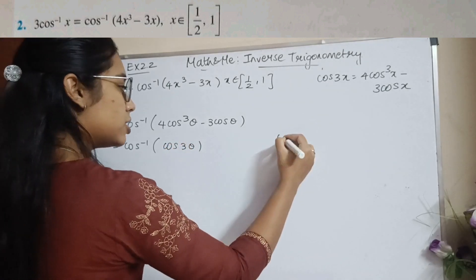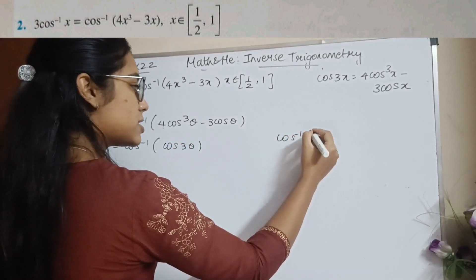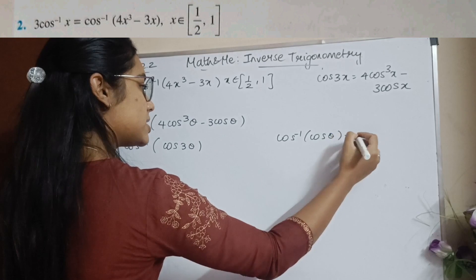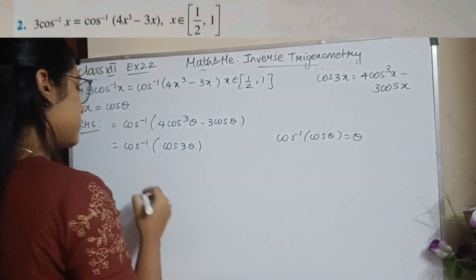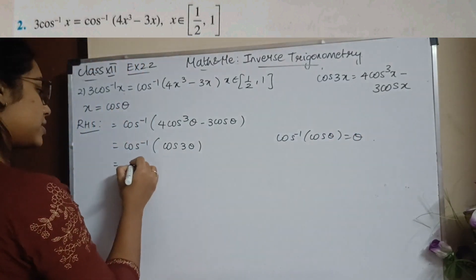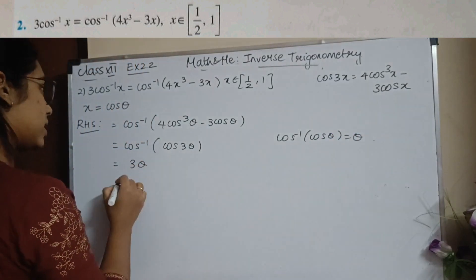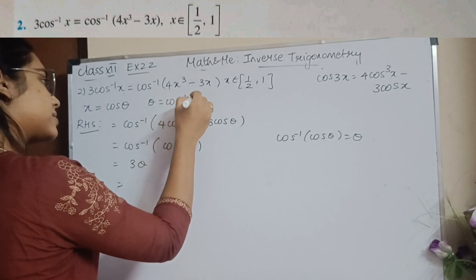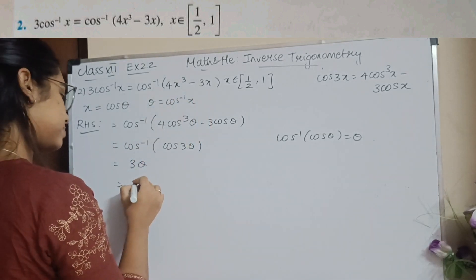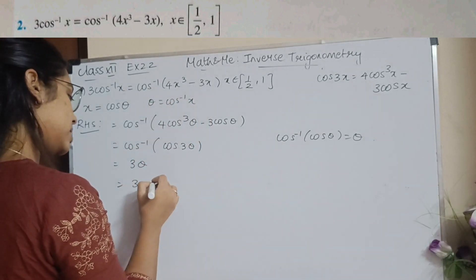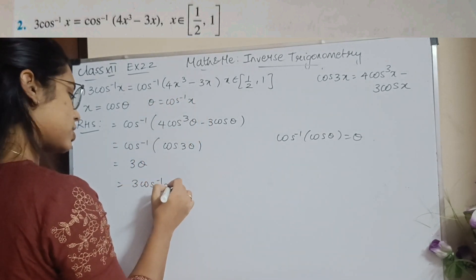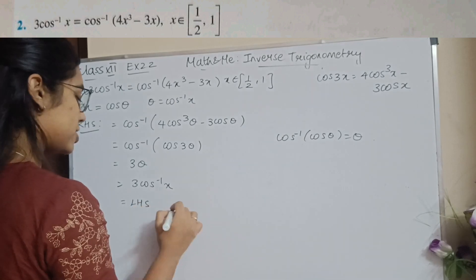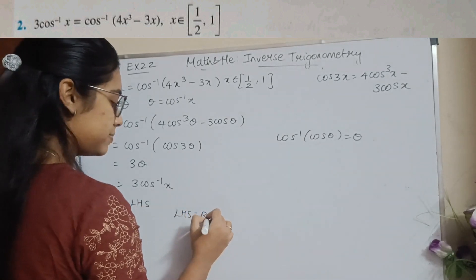We know that cos⁻¹(cosθ) = θ, so cos⁻¹(cos3θ) = 3θ. Since x = cosθ, θ = cos⁻¹(x), so we get 3cos⁻¹(x), which equals the LHS. Hence LHS = RHS.